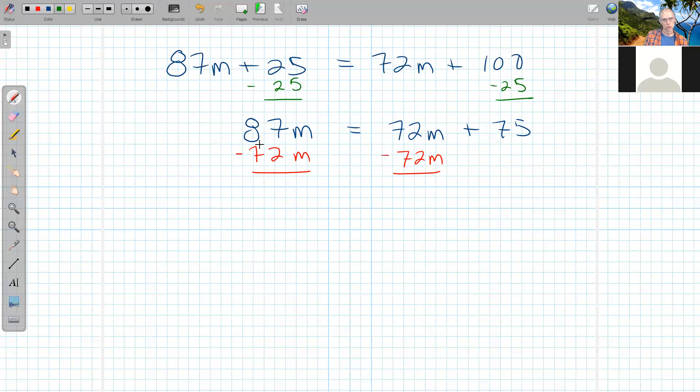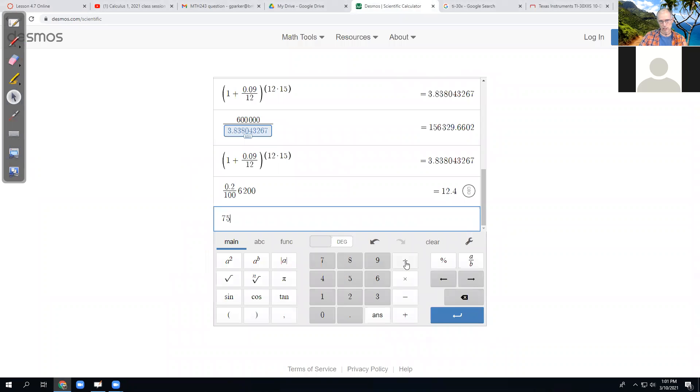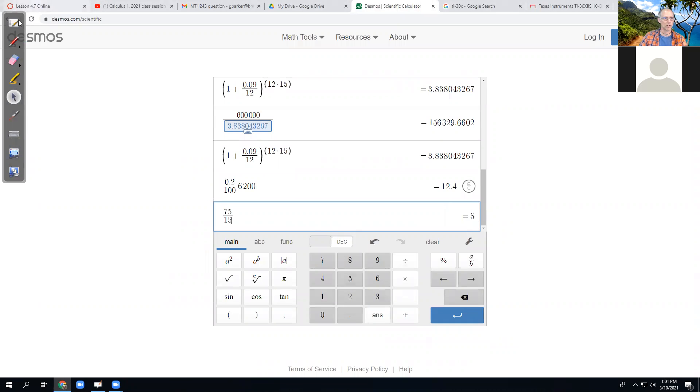87 minus 72 is 15M per month difference. On the other side, 72M minus 72M is gone, just 75 remains. Last, I divide by 15. So M equals 75 divided by 15. That's around 5. Calculator confirms: 75 over 15 is 5.